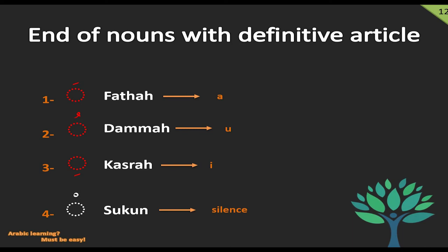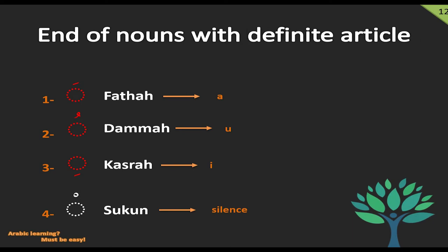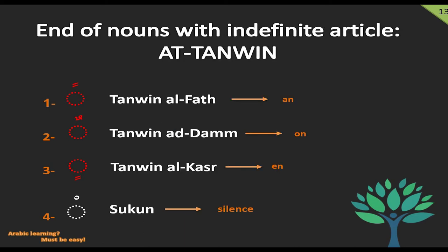If the case is definite — so there is Al-At-Tarif in front of the noun — then there are only four possibilities for the melody of the noun end, depending on what case the word has in the sentence. The end of the noun with a definite article can be either fatha, dhamma, kasra, or sukoon. If the case is indefinite — so there is no Al-At-Tarif in front of the noun — then there are three new options as alternatives to the previous ones.